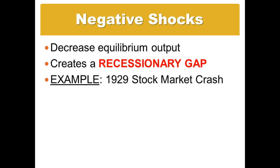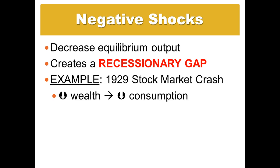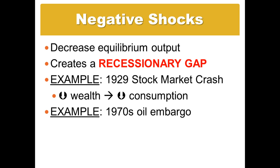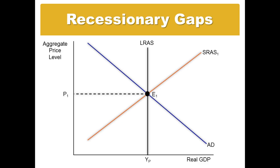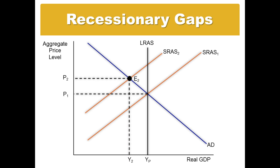A recessionary gap could be demand-based, like the 1929 stock market crash where people's wealth plummeted and consumption shrank. Or it could be a supply-side issue like the 1970s oil embargo from the Middle East, where the cost of oil rose due to a reduction in supply. With rising commodity prices, the direct cost of business increased, profits shrank, and short-run aggregate supply shifted to the left. Graphically, the oil embargo shifted short-run aggregate supply to the left, causing equilibrium to move from point E1 to point E2 at price level P2 and output Y2. The gap between potential output and actual short-run output is the recessionary gap.